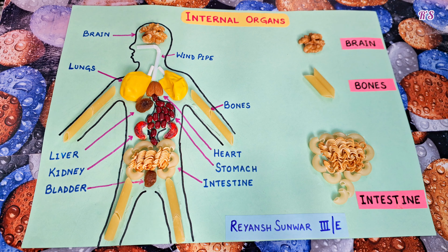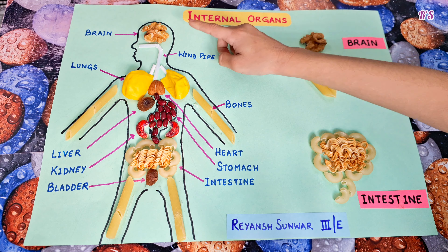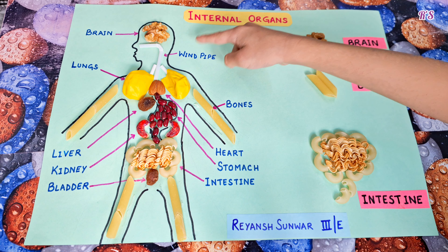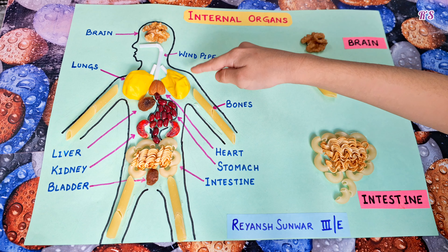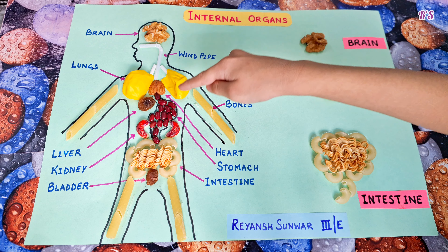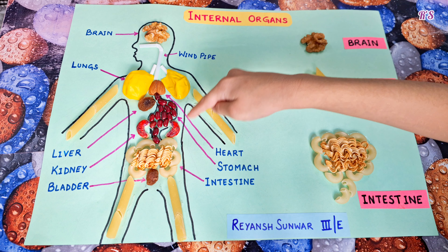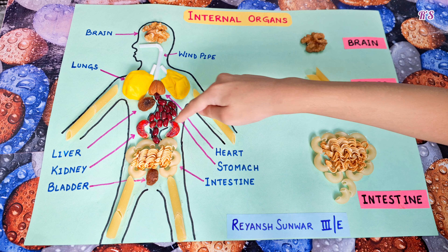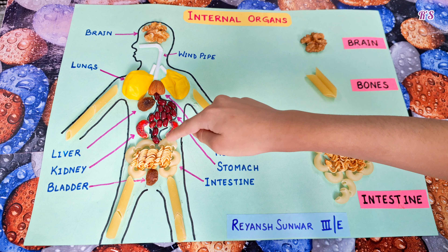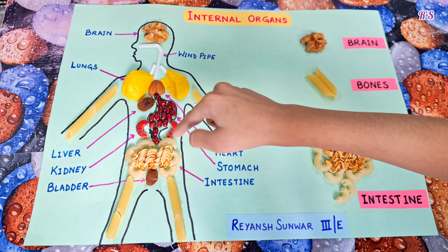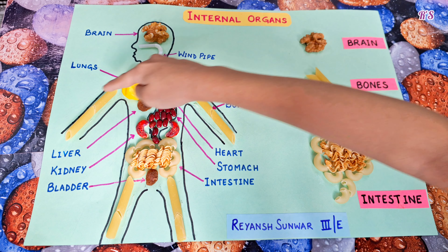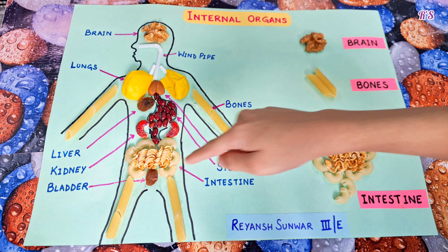Intestine and bladder. I have made the brain using walnut, straw for windpipe, balloon for lungs, almond for heart, raisin for liver, beans for stomach, cashew for kidneys, macaroni for large intestine and noodles for small intestine, raisin for bladder, and these pastas for bones.